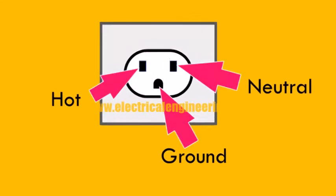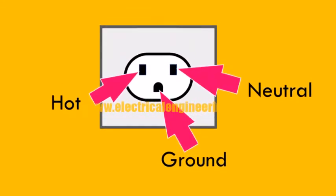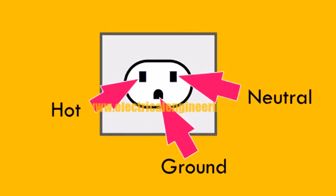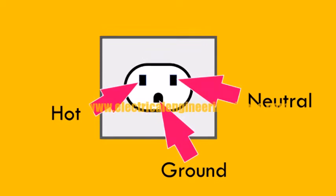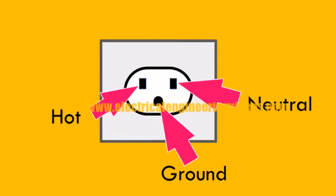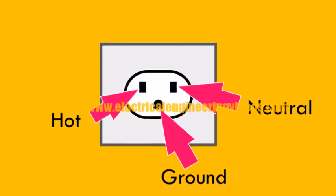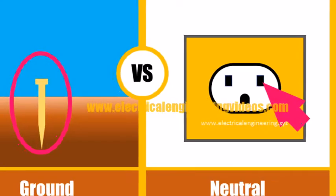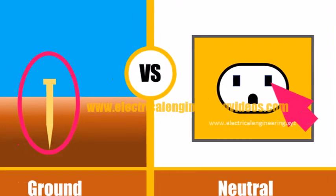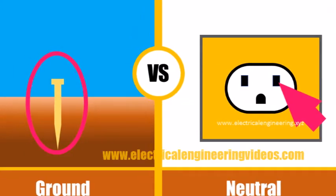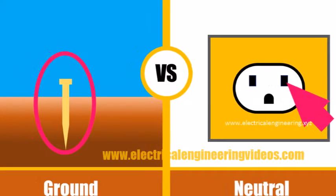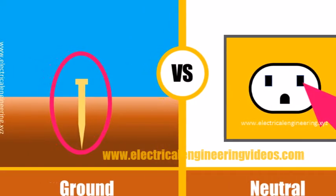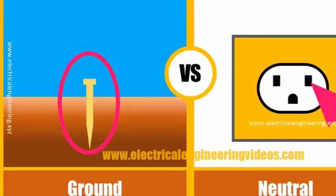You might have noticed the wall outlet at your home has three terminals: HOT, Neutral, and Ground. While the HOT terminal is quite easy to understand, the ground and neutral are two different and confusing terms. Today you'll learn the difference between ground and neutral.